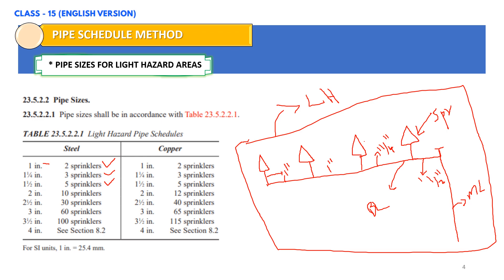Here we have only four sprinklers, and for the fifth sprinkler position we can go ahead with 40 mm — one and a half inch. From 6 to 10 sprinklers, we need to use two-inch pipe. From 11 to 30 sprinklers, we need to go ahead with two and a half inch pipe. From 31 to 60 sprinklers, we can use three-inch pipe. And for 61 to 100 sprinklers, we can consider three and a half inch or four-inch pipe.